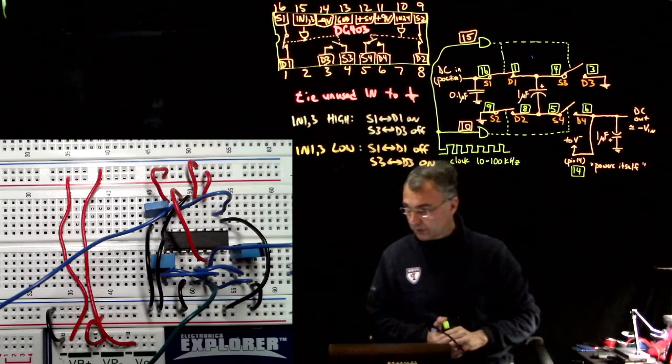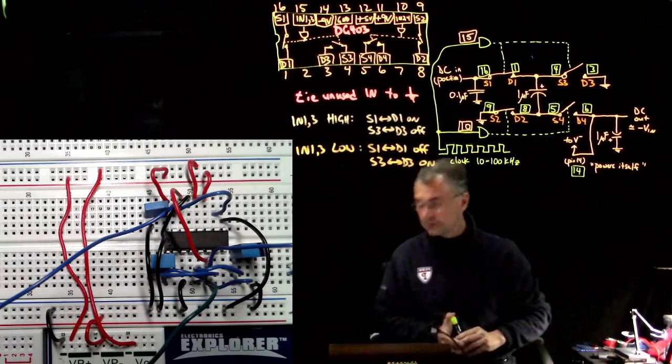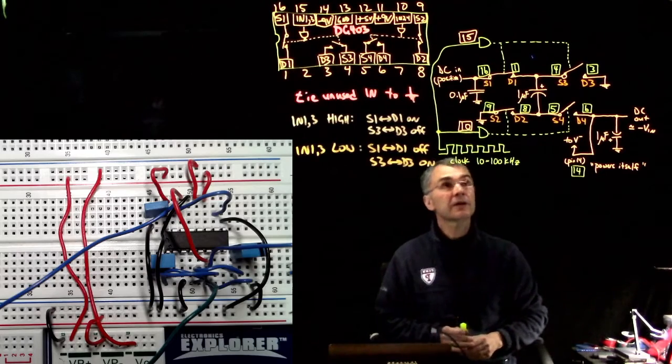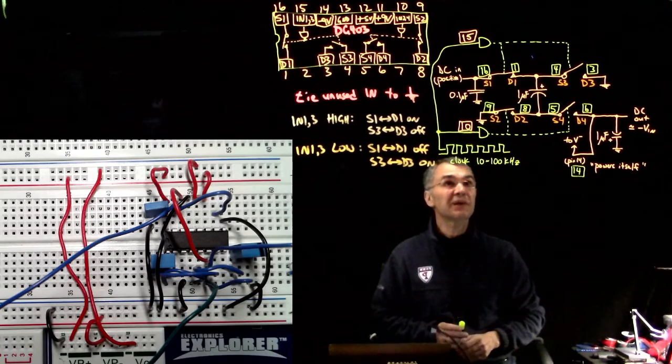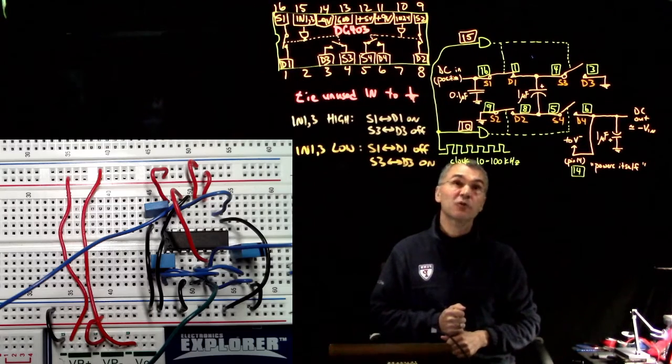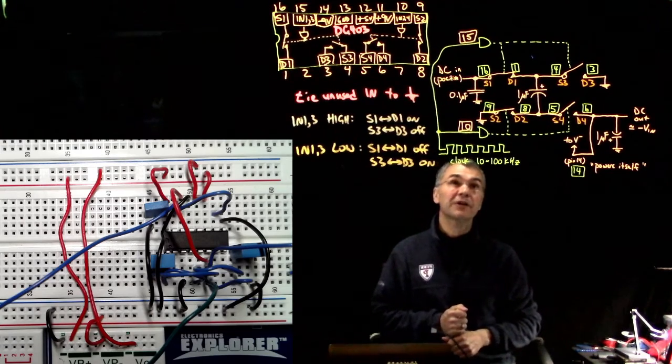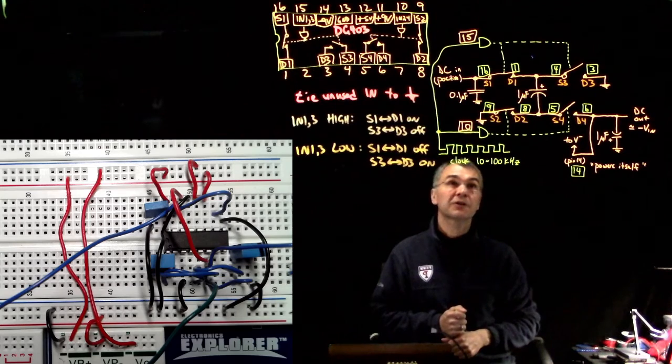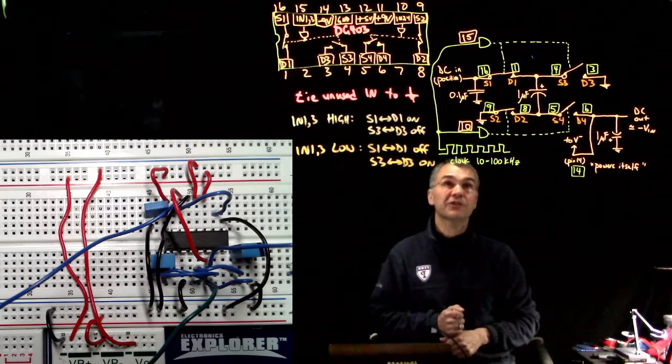Okay, let's do part 6.3 of Lab 20. This is making a negative power supply from a positive power supply. This is kind of a neat trick. It hints at how a switching power supply works, which is also called a DC-DC converter.